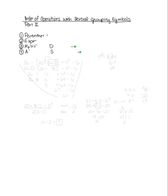Here is one example of what I mean by multiple grouping symbols. If I had thirty-six divided by bracket twenty minus parentheses four times two, close the parentheses, close the bracket, plus four to the third minus six.